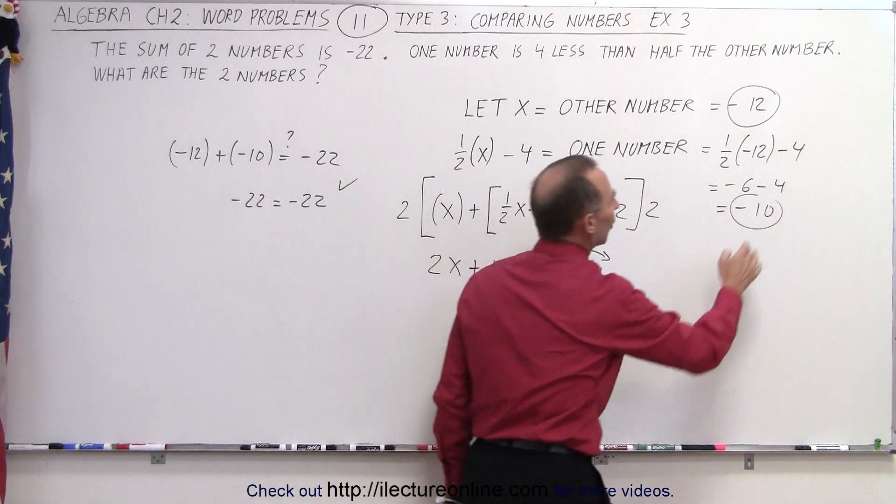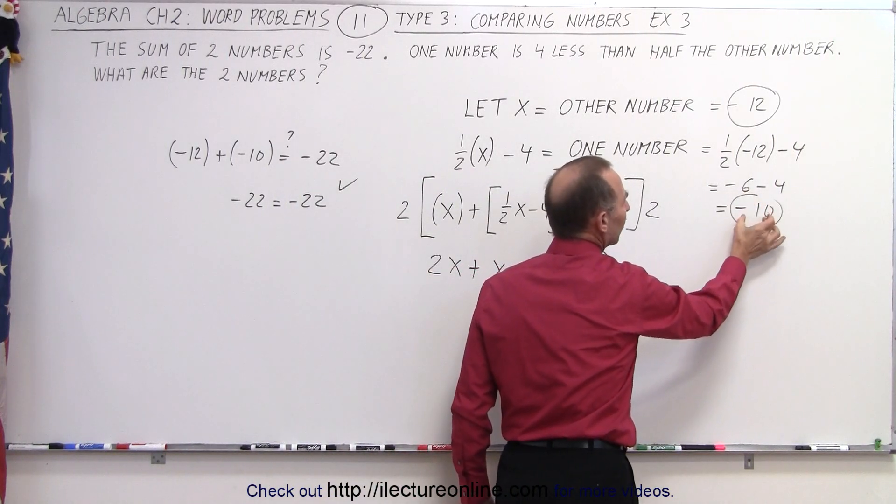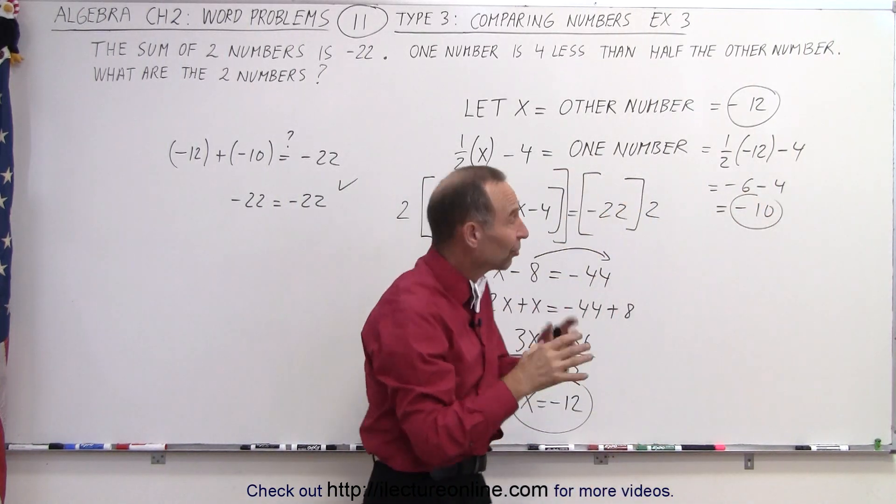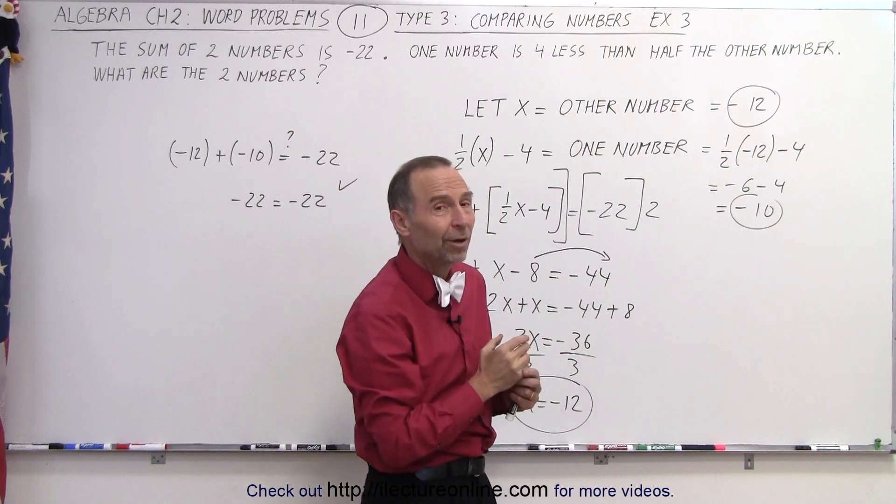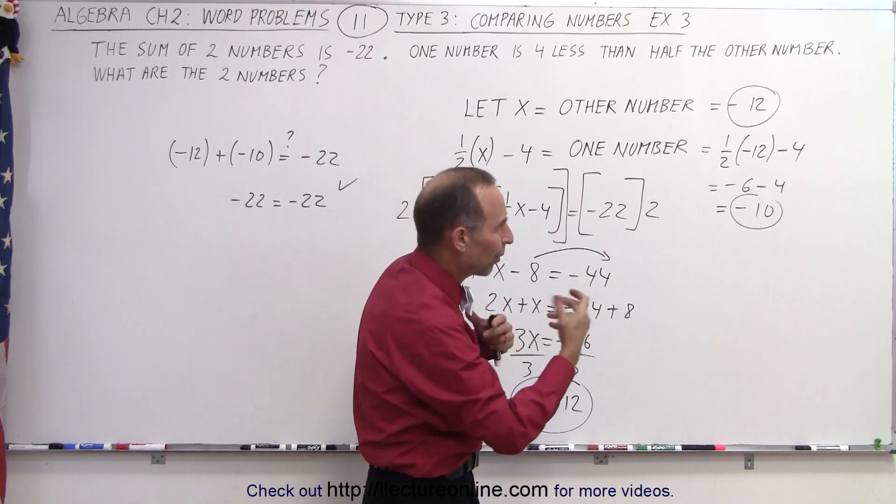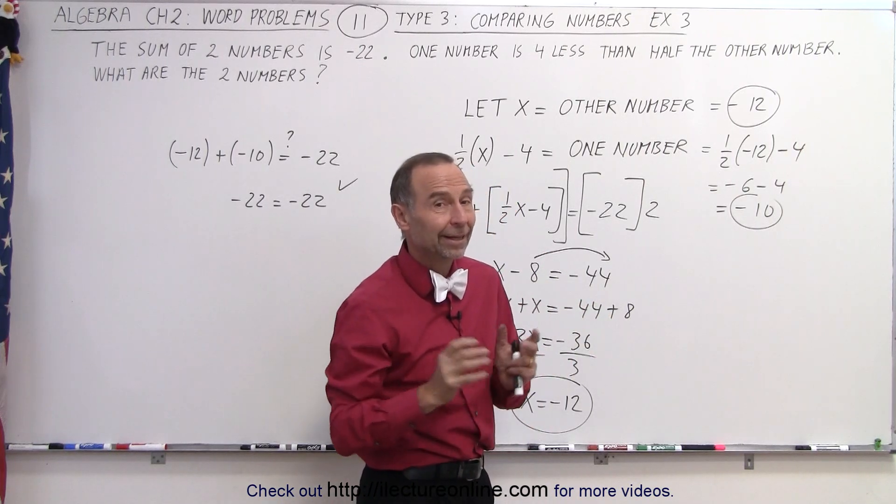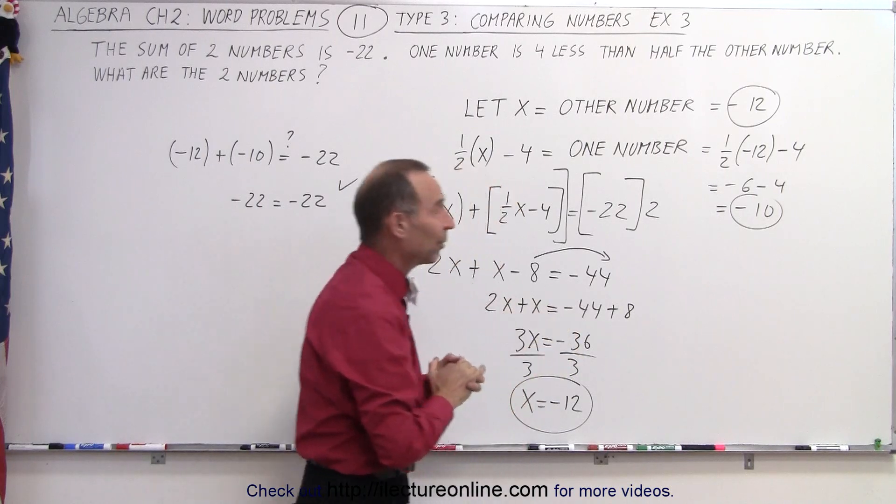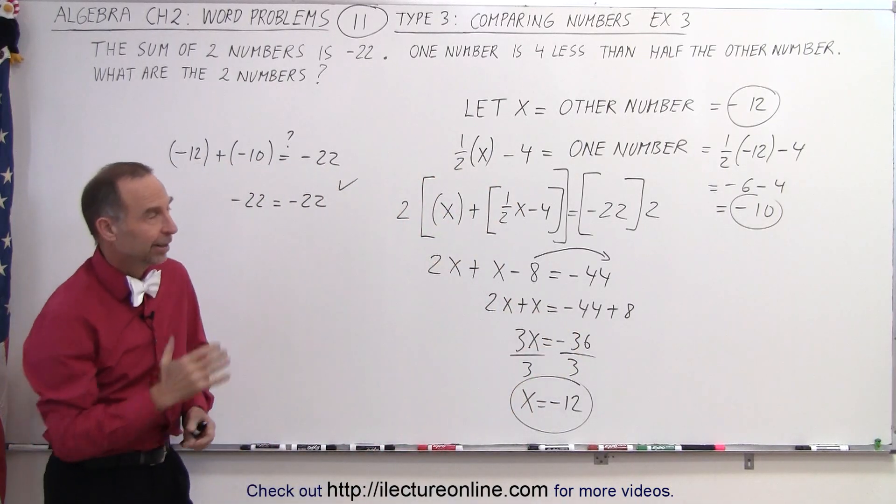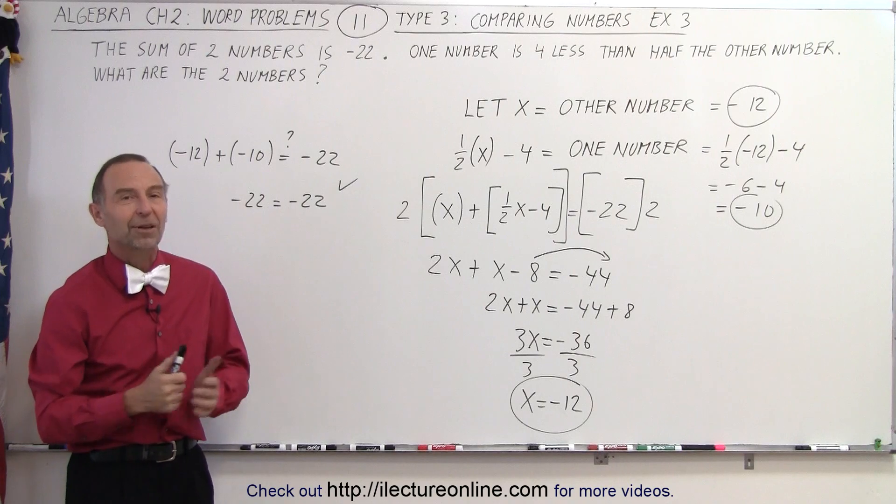Notice that when you say 4 less than half, it's surprising you get minus 10, which is almost the same magnitude as minus 12, but because of the negative signs, that's why it appears so weird. That's why strictly using the definition of what we have here is the only way to get the right answer. And that's how it's done.